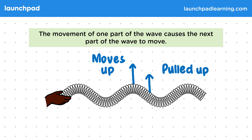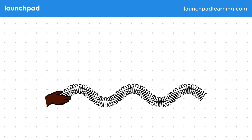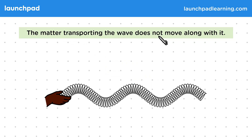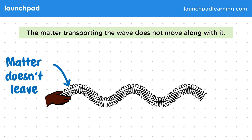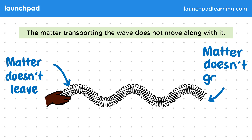But what can we say about the overall motion of the coils in the spring? Well the matter transporting the wave does not move along with it. When we move the spring up and down, we find that the matter doesn't leave our starting point, otherwise the spring would fall out of our hands. We also find that the matter doesn't gather where we're sending the energy. The coils are only ever moving up and down, and will return to their original position once the energy passes. You can see the same thing in, say, a water wave. If you float a leaf on the surface, it will only bob up and down as a ripple passes it. The water itself isn't moving with the wave.